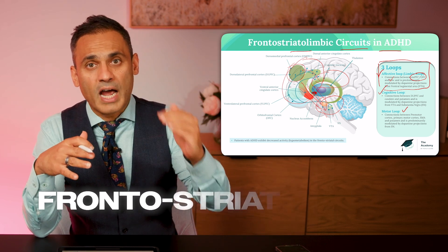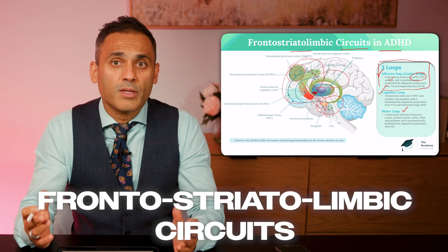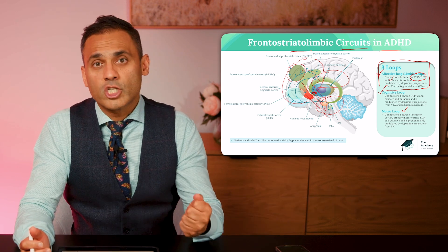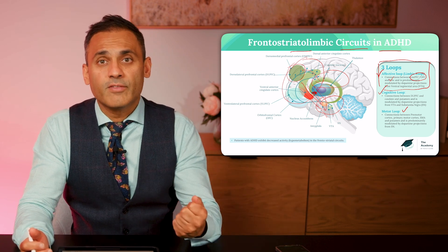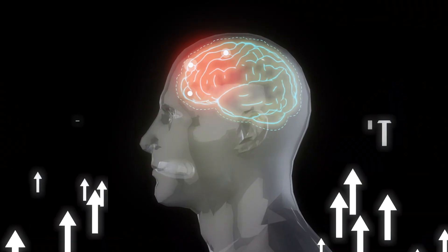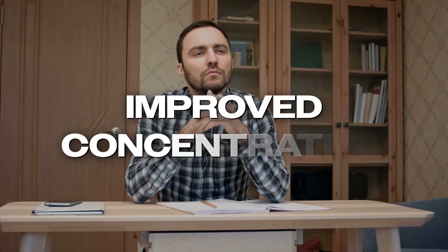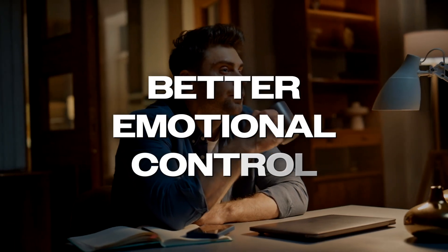The frontostriatal limbic circuits form the basis of cognition, activity, emotion, perception, and sleep. In ADHD, what we're trying to do is strengthen the frontostriatal circuits to improve emotional dysregulation — manifested as improved attention, improved concentration, and better emotional control.